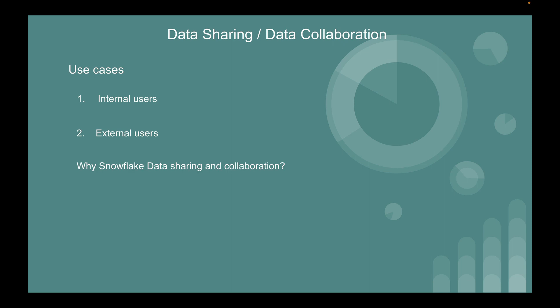Now the question is: why use Snowflake data sharing and collaboration, rather than existing methods like sending data over email or SFTP files, which are fairly secure methods? The number one reason is the accelerated process — it reduces lead time. You can share data quickly without requiring a lot of setup that the technology team has to do for SFTP or email, reducing the cycle time so onboarding can happen faster.